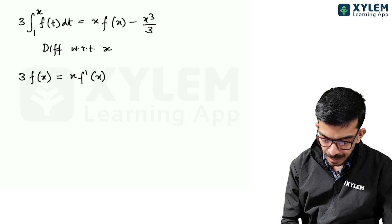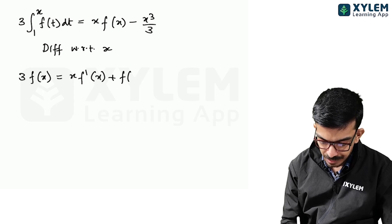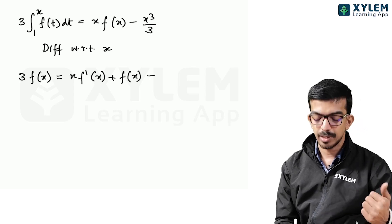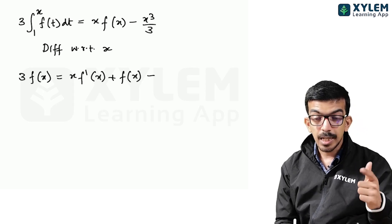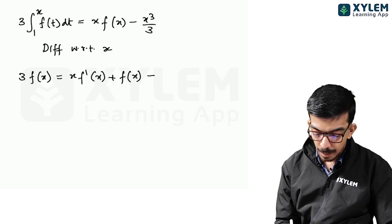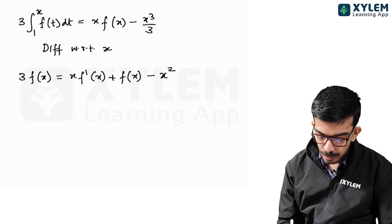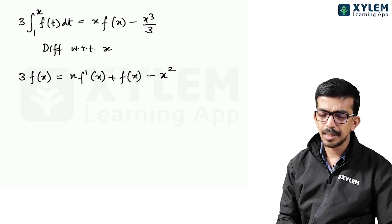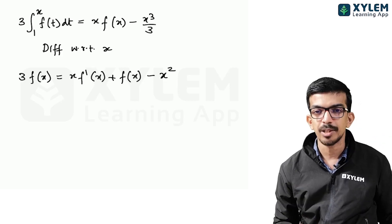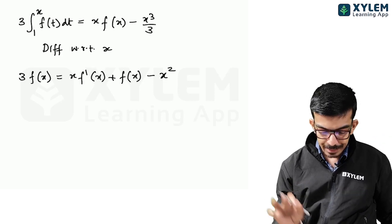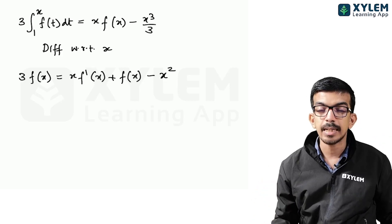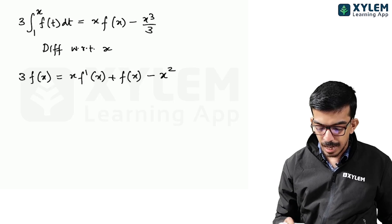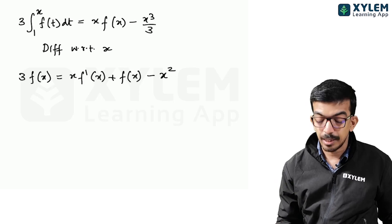Differentiating the right side: x·f'(x) plus f(x) minus x². On the left, 3·f(x). After simplification, the x² terms cancel, giving us a differential equation.